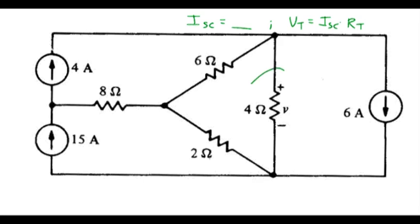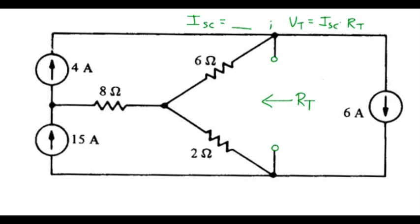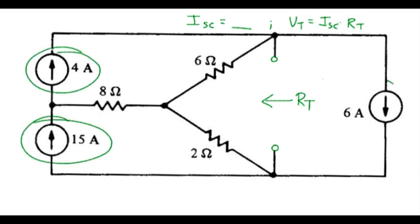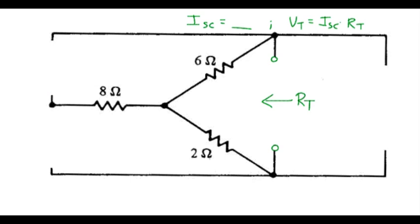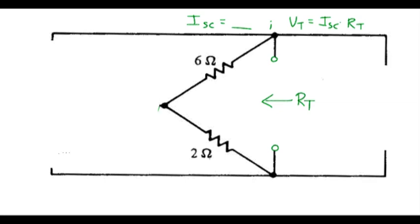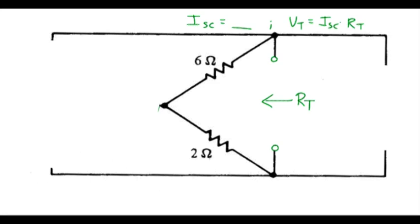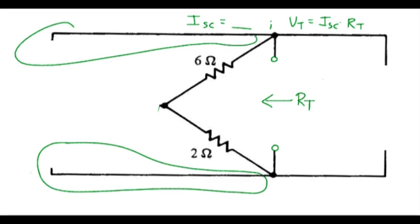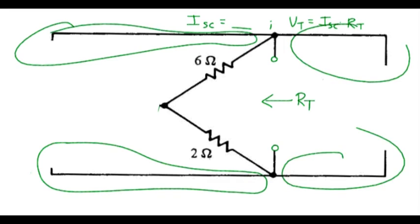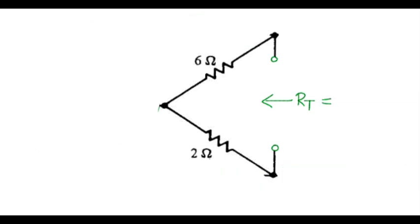First, I'll pull this device out of the circuit and apply the Lookback Resistance technique to look into those terminals and determine the equivalent resistance. The Lookback Resistance method says the independent sources aren't open — so those disappear. This resistor is now dangling in the air, so it can be removed. After cleaning up the extraneous wiring, we can see what we have left: two series resistors, giving us a Thevenin resistance R_T of 8 ohms.